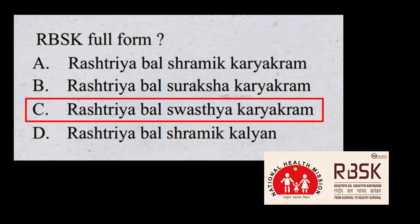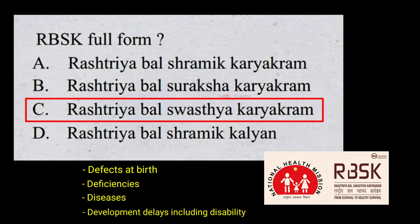Rastriya Balswastya Karikram is an important initiative aiming at early identification and early intervention for children from birth to 18 years to cover four D's: defects at birth, deficiencies, diseases, and developmental delays including disability. It aims to improve survival outcomes by decreasing morbidity and improving the quality of life of children.